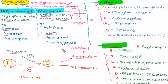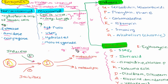A famous example is: if a patient is taking a contraceptive pill and is also given an anti-tubercular drug like rifampicin, the effectiveness — that is, the efficacy — of the contraceptive pill will be reduced. That is one of the famous examples of enzyme induction.